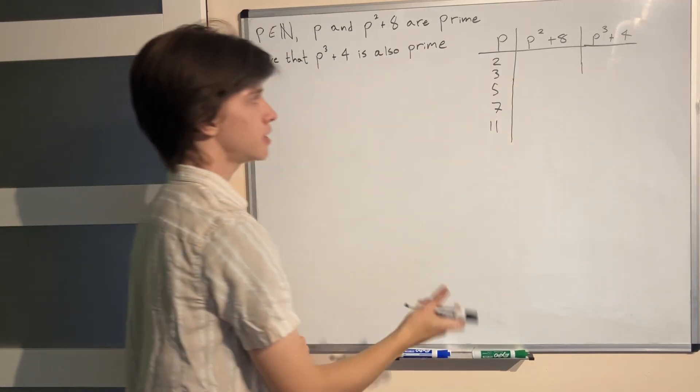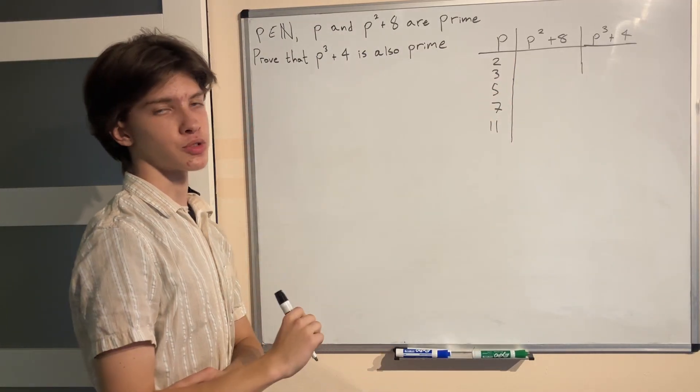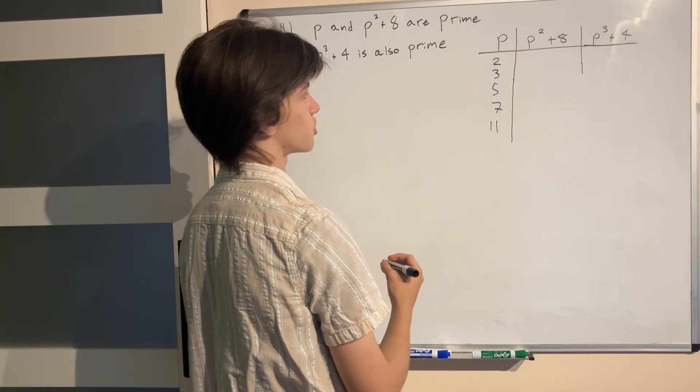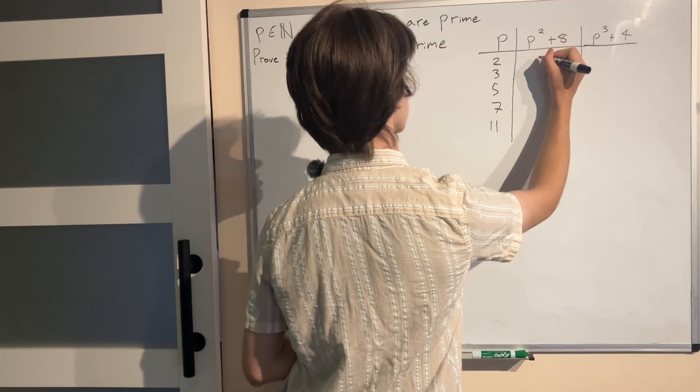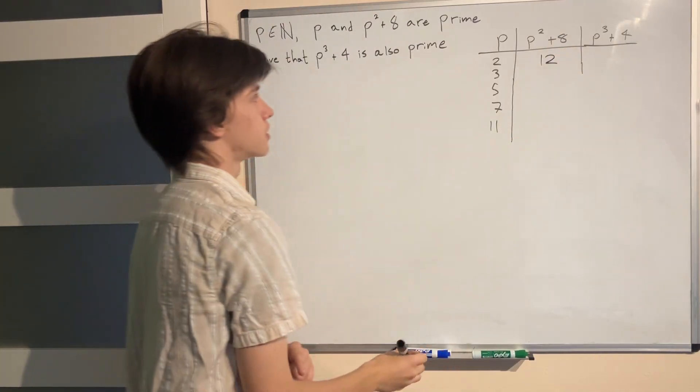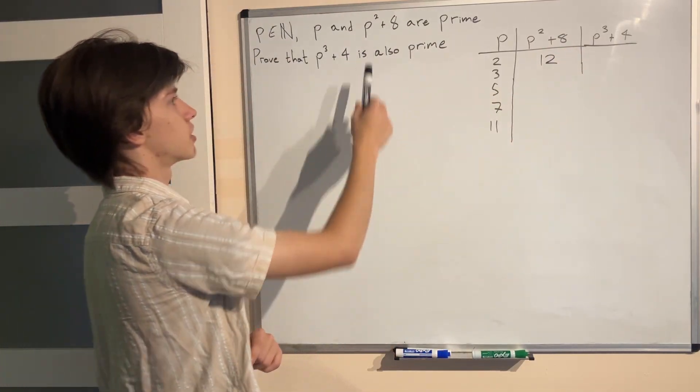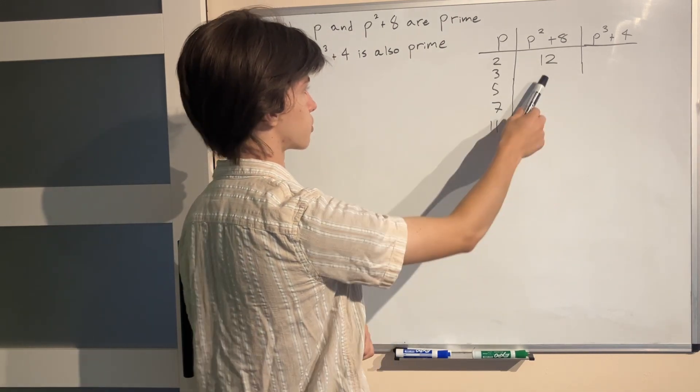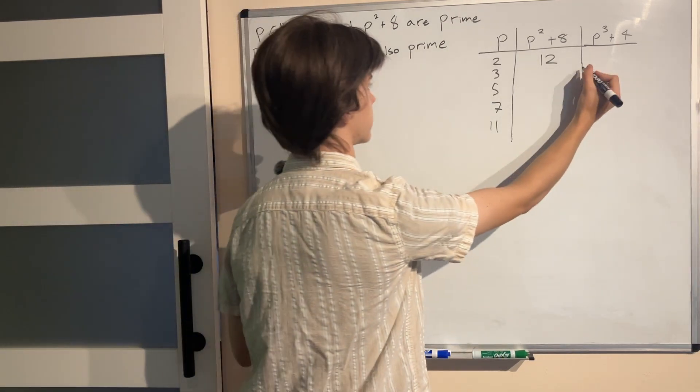Plugging in these values of p, let's see what these numbers will result in. So for the first one, 2, p² + 8 is obviously not prime. It's going to be 4 + 8 which is 12. So because both these numbers don't check our conditions, we don't even have to check for p³ + 4. p² + 8 is not prime. So let's stop right there.